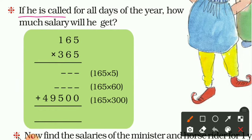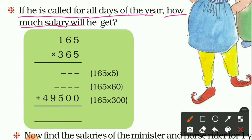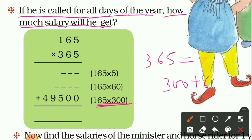The next word problem: if Shantaram is called for all days of the year, how much salary will he get? The solution uses 165 multiplied by 365. Since 365 means 300 plus 60 plus 5, the multiplication with 300 gives a product of 49500.